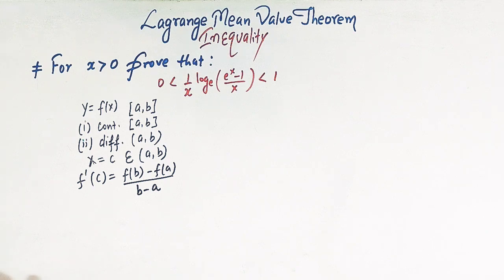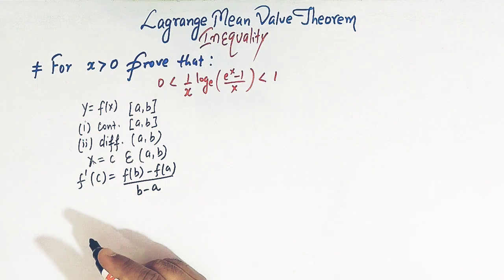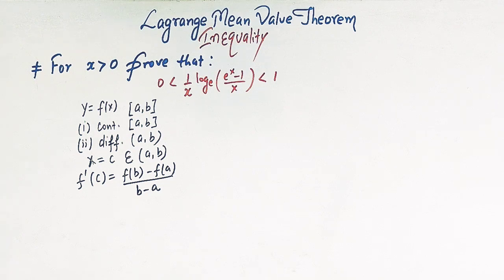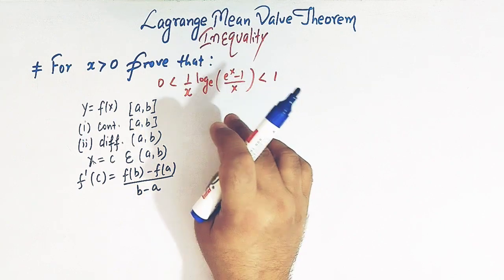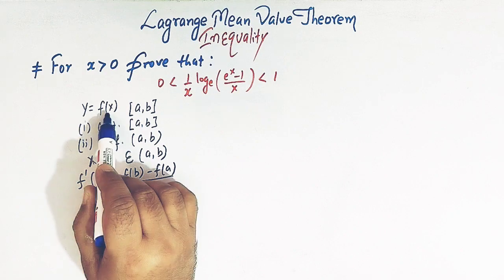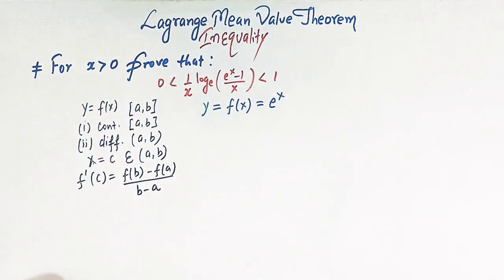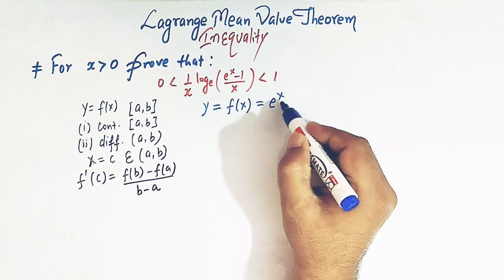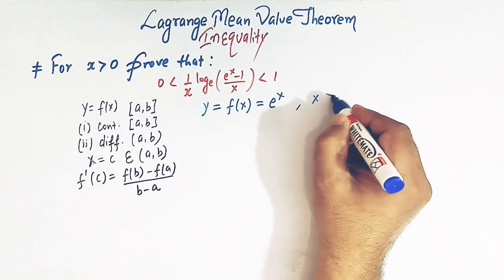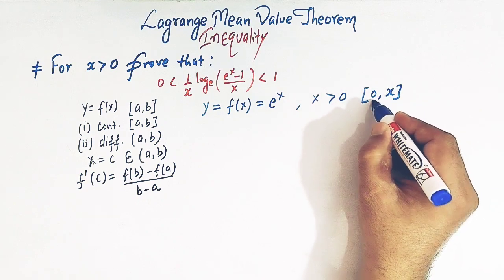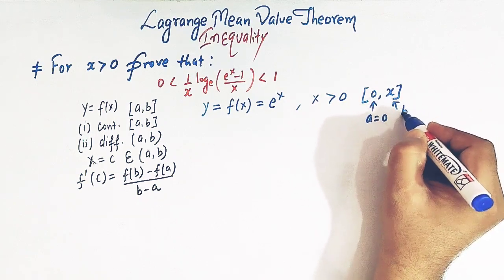We have already discussed all these things in detail in our earlier videos, so this is just for the sake of revision. Now, to prove the inequality, we'll first assume an appropriate function. Let y = f(x) = eˣ for x greater than 0. We'll consider the interval [0, x], so a = 0 and b = x.